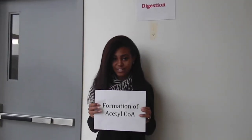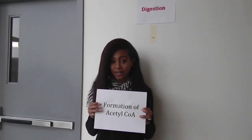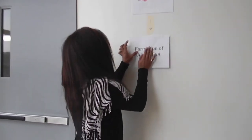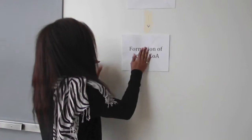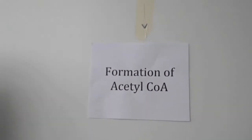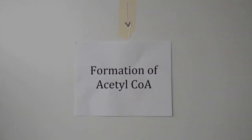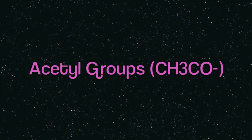The second stage is the formation of acetyl coenzyme A. During this stage, monosaccharides, amino acids, and fatty acids are degraded into acetyl groups — two-carbon units that are bonded to coenzyme A.